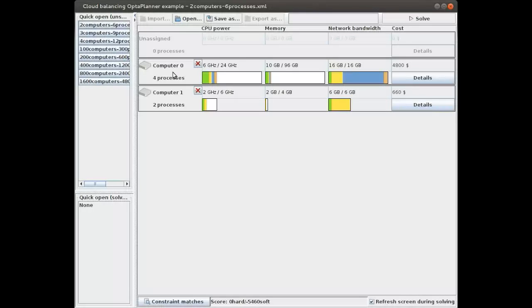When we assign processes to these computers we need to make sure that the computers have enough CPU, memory, and network bandwidth to accommodate all of their processes. In this case we assigned four processes to computer zero and you can see there is enough CPU - only six gigahertz being used of the 24 gigahertz available, and there's enough memory, 10 gigabytes being used of only 69 gigabytes.